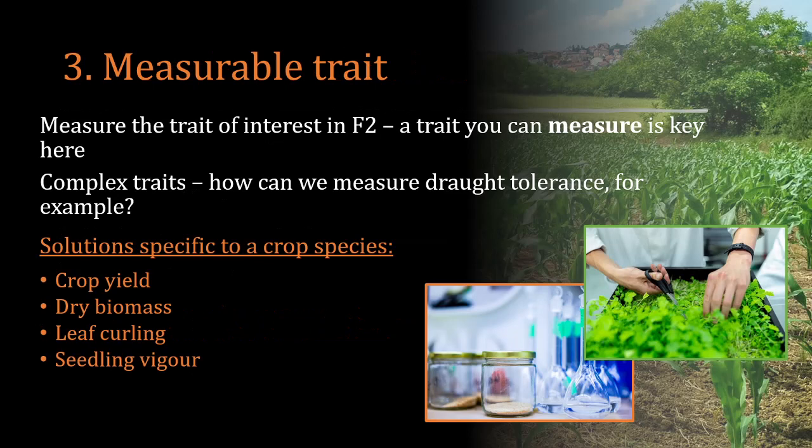The final component to a QTL mapping experiment is the measurable trait. It's really important that the trait you are trying to define has attributes which can be measured. This may not be immediately obvious for complex traits like drought tolerance. Considering rice or maize, for example, we could measure attributes like leaf curling, dry biomass, and yield in order to assign a numerical value to drought tolerance.